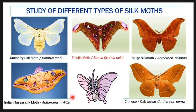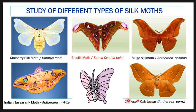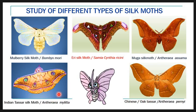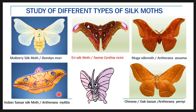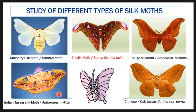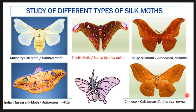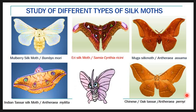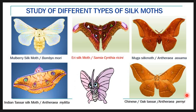There are two Tassar silk moths. The first is Antheraea mylitta, commonly called the Indian Tassar silk moth, commonly reared in India. The larvae of the Indian Tassar silk moth feed on the Arjun plant. The second is Antheraea pernyi, commonly known as the Chinese Oak Tassar silk moth, reared in China. The larvae of the Chinese Oak Tassar silk moth are polyphagous, mainly feeding on oak plants.